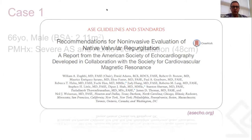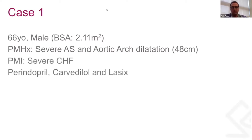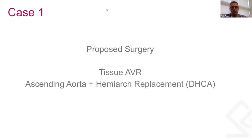Our first case is a 66-year-old male with a past medical history of severe aortic stenosis and aortic root dilatation, who presented to the hospital with severe heart failure. He had a normal angiogram done last year, and at the same time had a TEE that showed a severely dilated left ventricle with an EF of approximately 20% and low-flow, low-gradient aortic stenosis. The proposed surgery was a tissue AVR plus or minus ascending aorta and hemi-arch replacement.